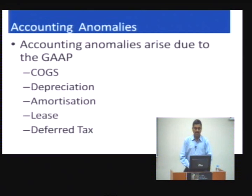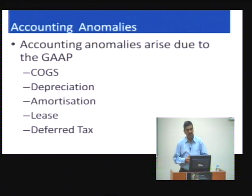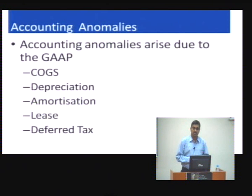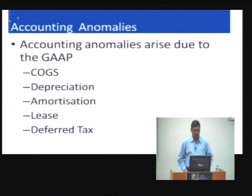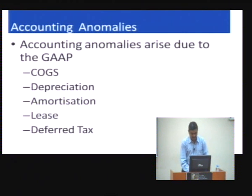The accounting anomalies, however, arise due to differences in generally accepted accounting principles, or the options given under GAAP with respect to COGS, depreciation, amortization, lease, and deferred tax. We will pick up some of them to understand the accounting anomalies.